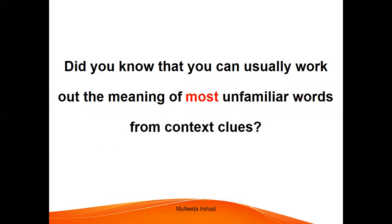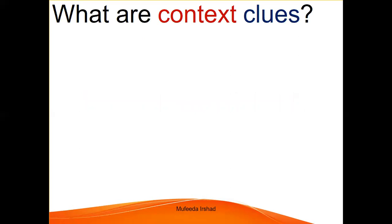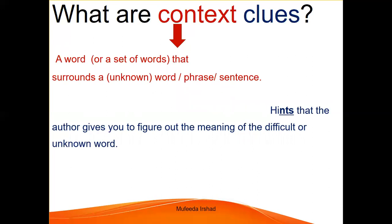Did you know that you can usually work out the meaning of most unfamiliar words from context clues? You must be wondering what context clues are. Let us now try and understand what context clues are and how to figure out the meaning of difficult words using them. The context can be a word or a set of words that surrounds another word or phrase — whatever surrounds a word is its context. Clues are hints that the author gives you to figure out the meaning of the difficult or unknown word.